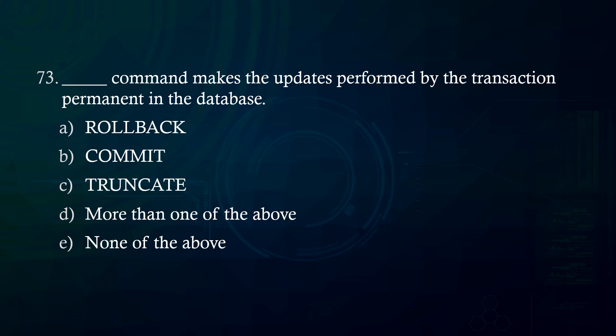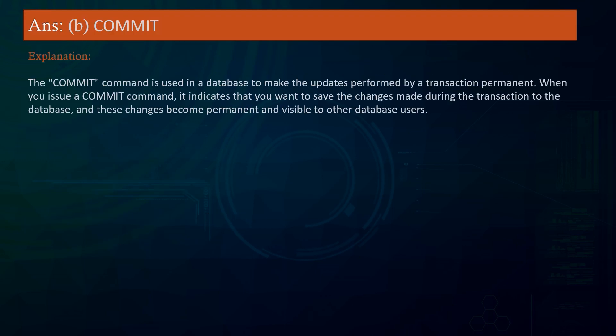Answer: Commit. Explanation: The commit command is used in a database to make the updates performed by a transaction permanent. When you issue a commit command, it indicates that you want to save the changes made during the transaction to the database, and these changes become permanent and visible to other database users.